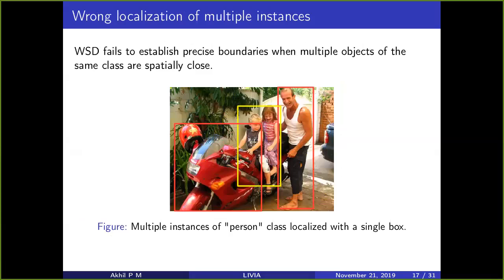When there are multiple closely spaced instances, the method fails to establish a precise boundary between objects because the activation happens over a broad area. It will select a region covering most of the objects — with a single box it will localize all these objects together. Here you can see that it tries to localize multiple people in a single box.